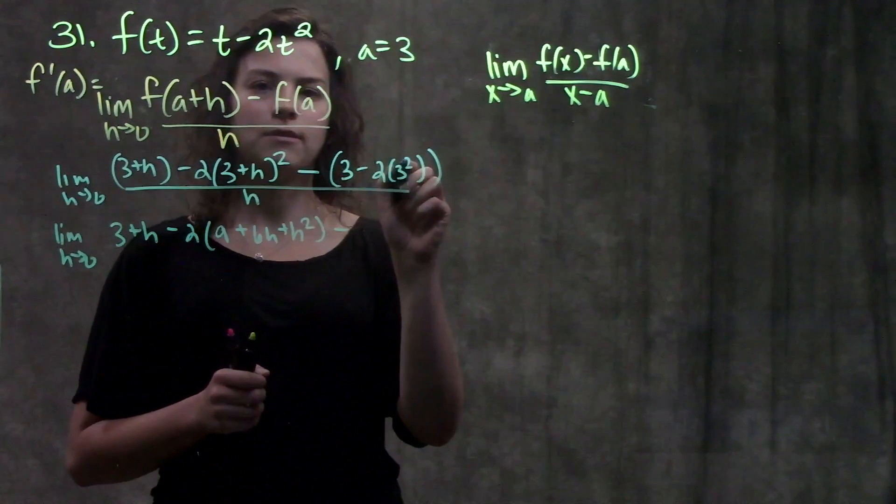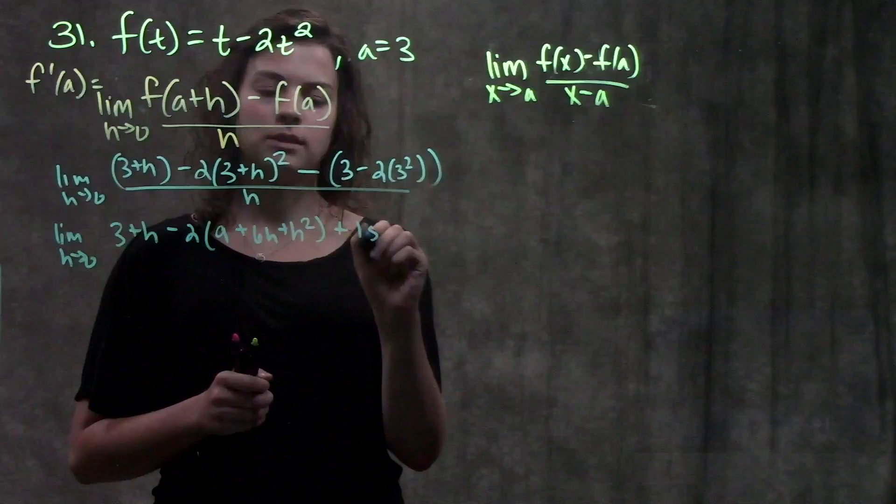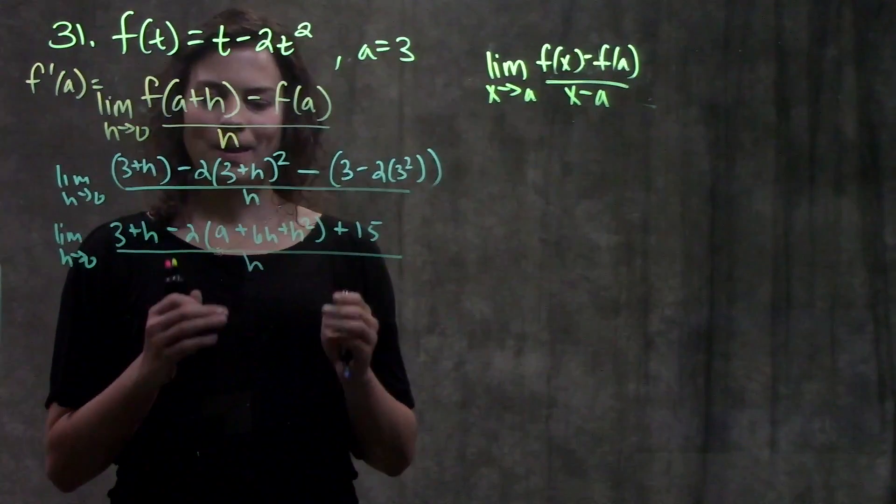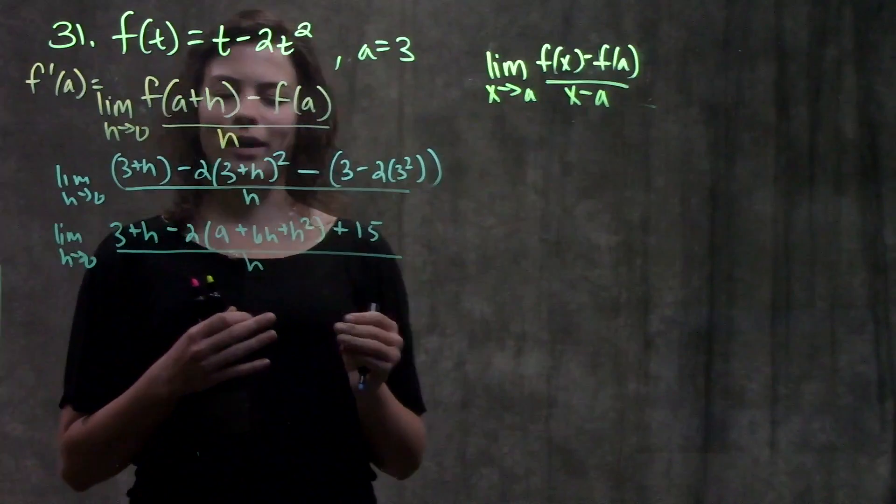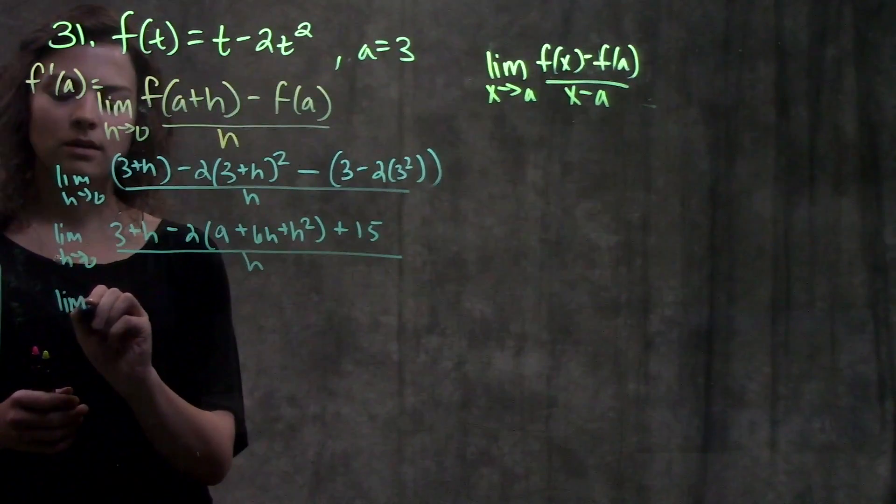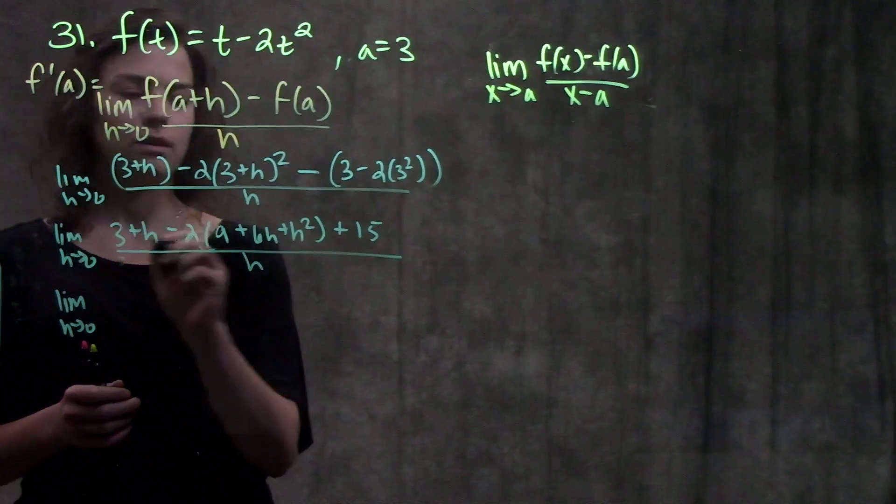All that is still over h. Let's simplify this a little bit more. I'm going to combine my like terms. So I have a 3 and a 15 there that I'm going to add. That gives me 18.